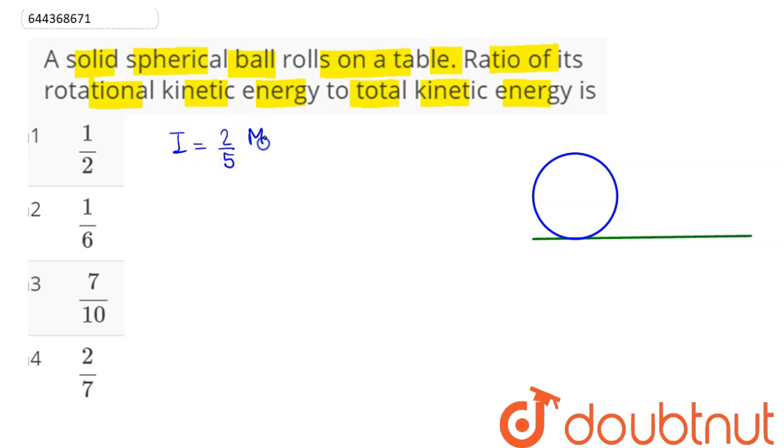So here we can see the center of mass has velocity v, and we can say here for pure rolling condition the solid sphere must rotate in clockwise sense such that the relative velocity of the point of contact with respect to the surface becomes zero, so that v equals rω. So here we need to find the ratio of rotational kinetic energy to total kinetic energy.